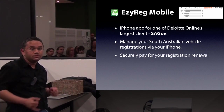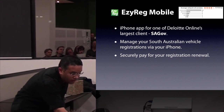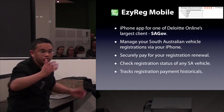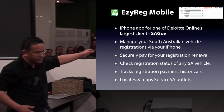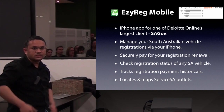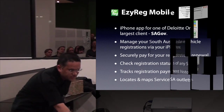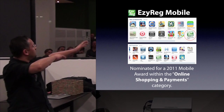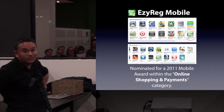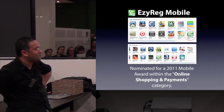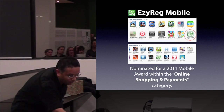You can pay for your registration just via the iPhone app, check your rego details when it's about to expire, track your payment history, and also locate Service SA outlets nearby. At one stage it was New and Noteworthy, and then it turned out to be a Staff Favourite. And it's also been nominated for a Mobile Award.